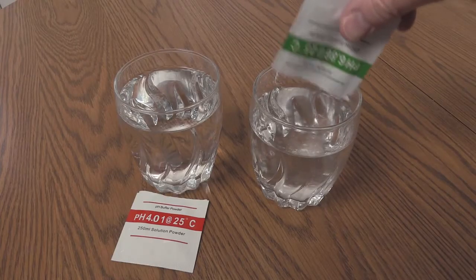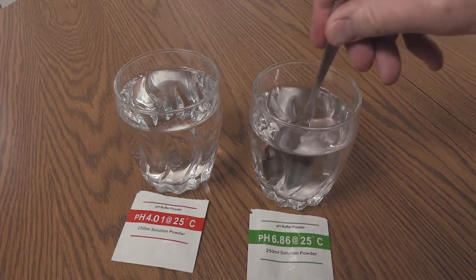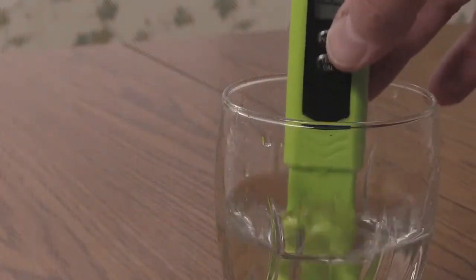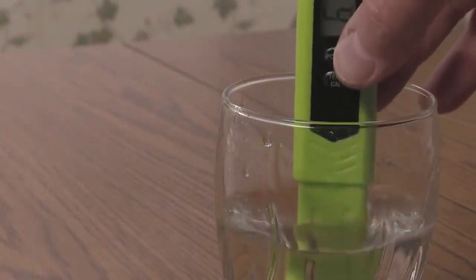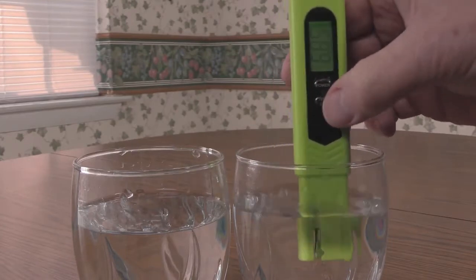Now mix the pH 6.8 calibration solution. Stir to dissolve most of the powder. If you soak the probe, give it a quick rinse in distilled water. Place the probe in the 6.8 solution.